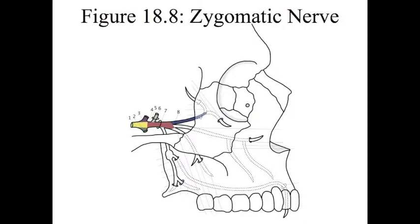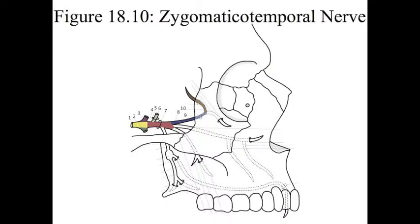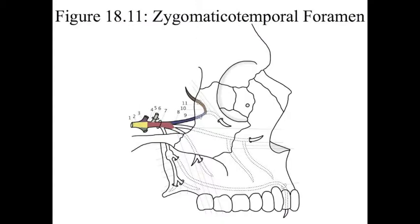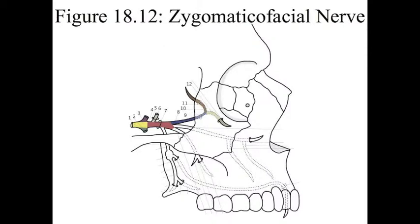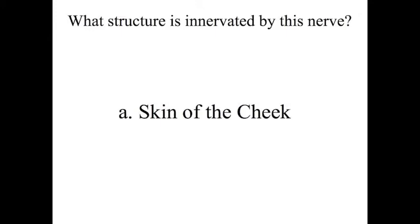Number 8 is the zygomatic nerve, and it enters the orbit through the inferior orbital fissure. Number 10 is the zygomaticotemporal nerve — it innervates the skin of the temple. Number 11 is the zygomaticotemporal foramen. Number 12 is the zygomaticofacial nerve, and it innervates the skin of the cheek. Number 13 is the zygomaticofacial foramen. If you need help remembering the branches of the zygomatic nerve, just think that it's a zygomatic fanatic, because every single branch has the phrase zygomatic in it.